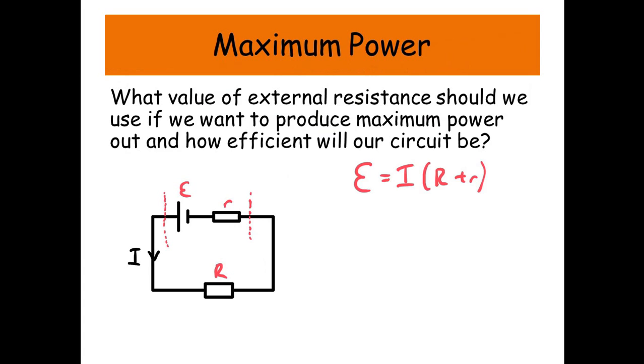We know that EMF is equal to the current times (R + r). We also know that power is equal to I²R. Efficiency is equal to power out divided by power in, and if I want to know that as a percentage I can just times by 100.